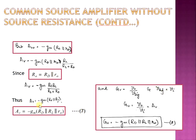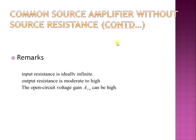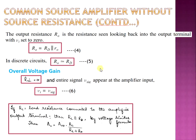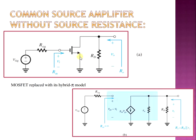Since the input signal equals the input voltage applied, the gain of the amplifier equals the overall voltage gain. Equations 7 and 8 are the same. This completes the common source amplifier without the source resistance — called so because no resistance is connected to the source terminal; it is directly grounded.